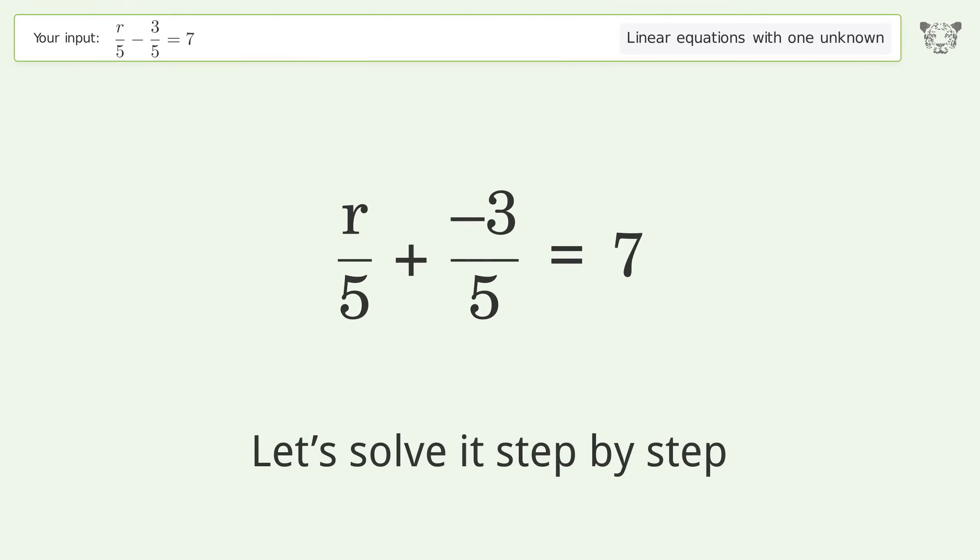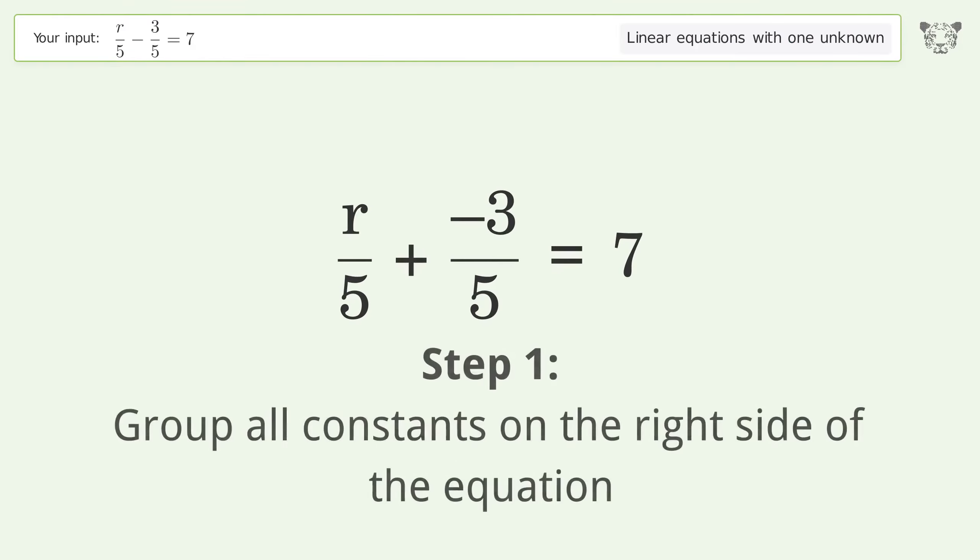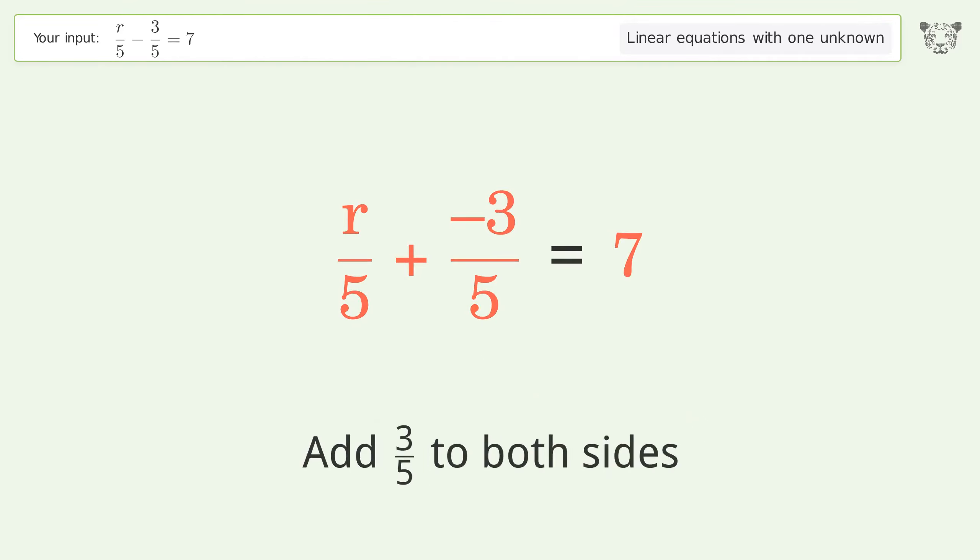Let's solve it step by step. Group all constants on the right side of the equation. Add 3 over 5 to both sides.